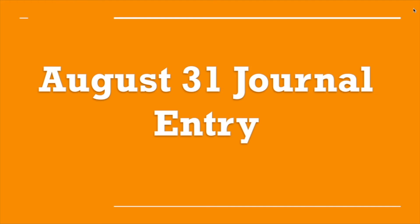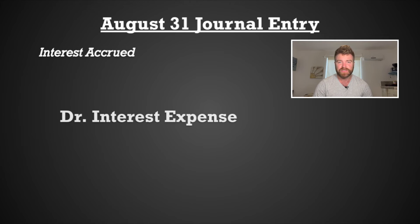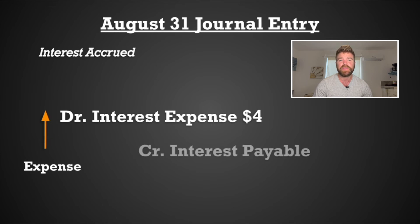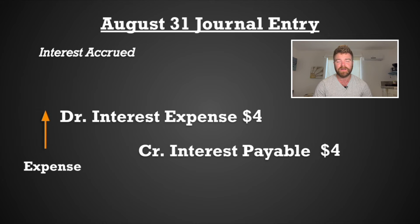Our August 31st journal entry: we will debit interest expense for $4, showing expenses increasing, and we'll credit interest payable for $4, showing the interest that will be paid back later. Liabilities will be increasing.